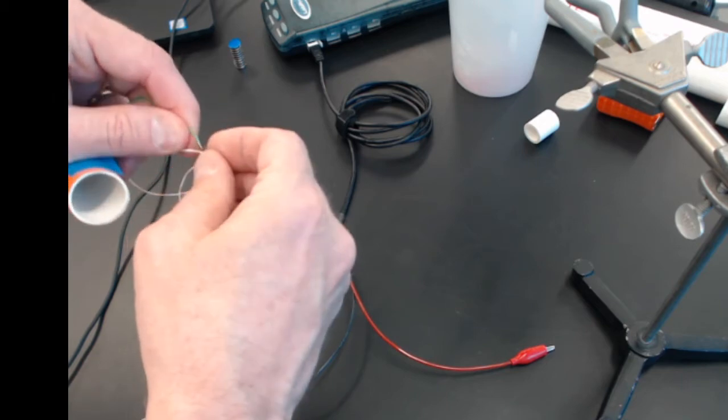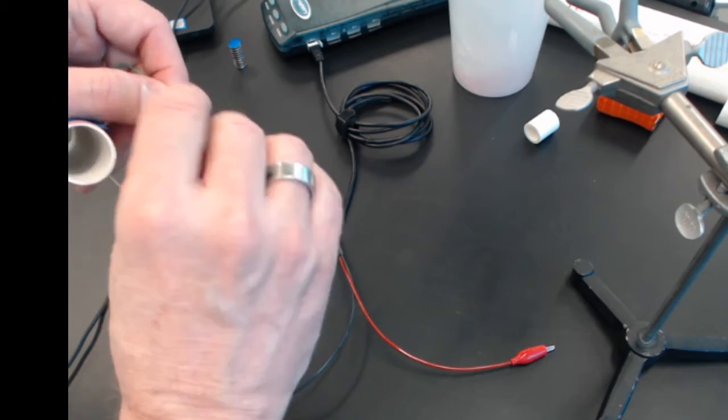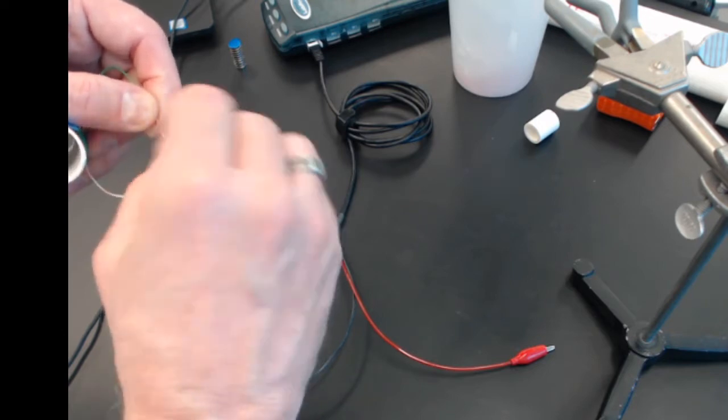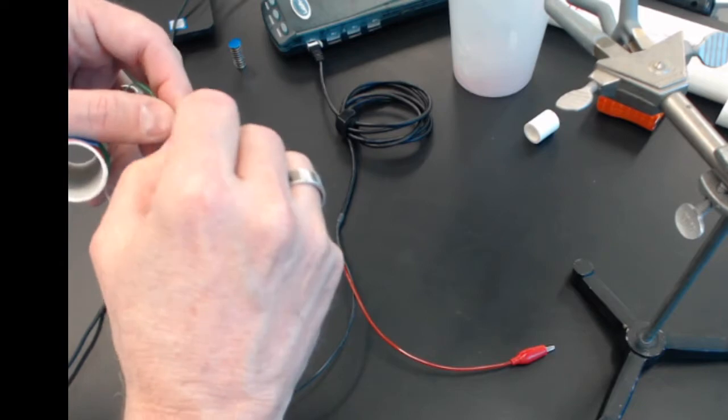I'm going to take these two bare ends of the wire and twist them together. They don't have to be tight since we want to be able to undo them later. I'll just cross them and give about three twists of wire.